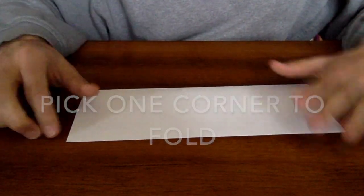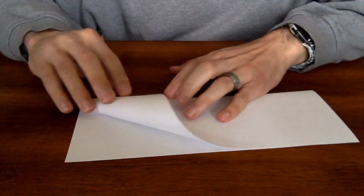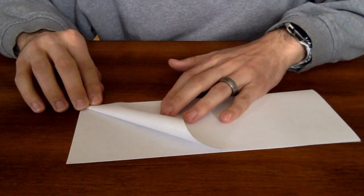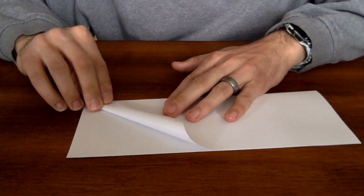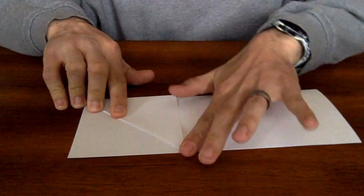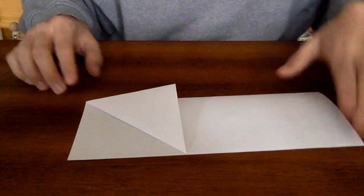Then you're gonna flip one corner in. So this is how I flip my corner in. Try to get it all the way flush with the bottom. Like so.